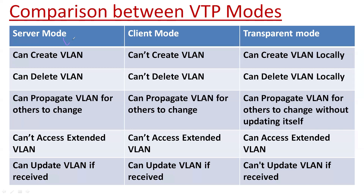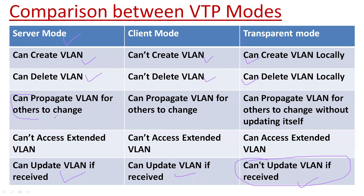Now let's do the comparison between these three modes. The switch in server mode can create and delete VLANs, while in client mode it cannot create or delete VLANs but can update VLAN information when received. In server mode, received information will also automatically update the database. In transparent mode, it will not update VLAN information from others — it can create and delete VLANs only locally. All three modes have the feature to forward VLAN information.